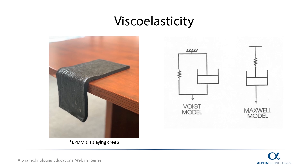The two most common models for defining viscoelasticity are the Voight and the Maxwell model. The Voight model uses a spring and a dashpot in parallel, responding to an applied stress. This model is quite effective for modeling a material's creep — the change in strain over time after applying a given stress to a material. An easy way to imagine this is a rubber raincoat hanging on a nail: over time, the coat will begin to stretch, i.e. deform, while undergoing the same stress — in this case, gravity.